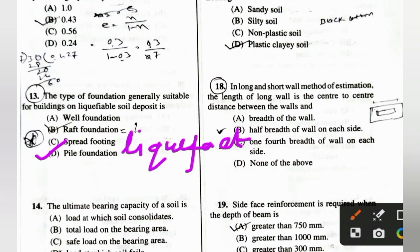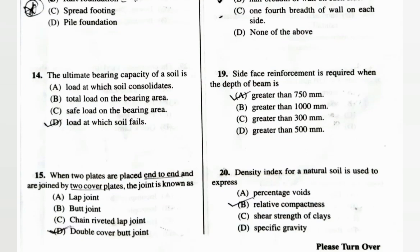Regarding liquefaction: liquefaction is the phenomenon in which the strength and stiffness of a soil is reduced by earthquake shaking or other rapid loading. Due to the vibrations, the soil loses its shear strength and stiffness. For liquefiable soil, pile foundation is the recommended foundation type.